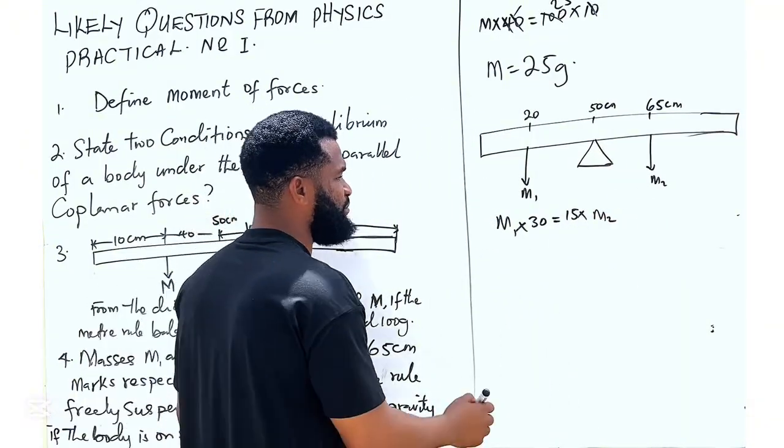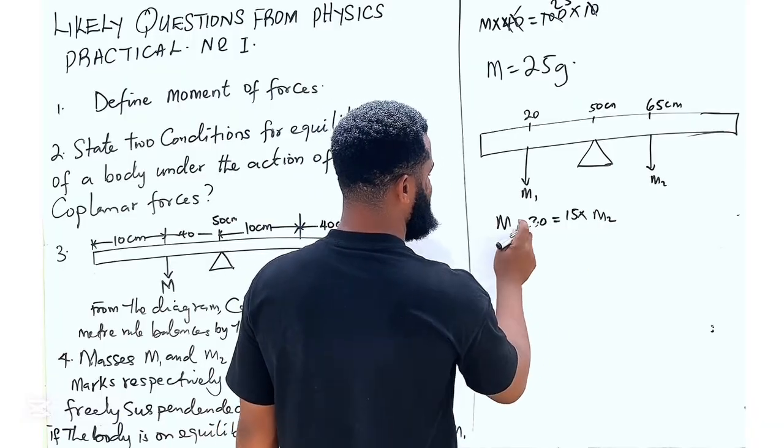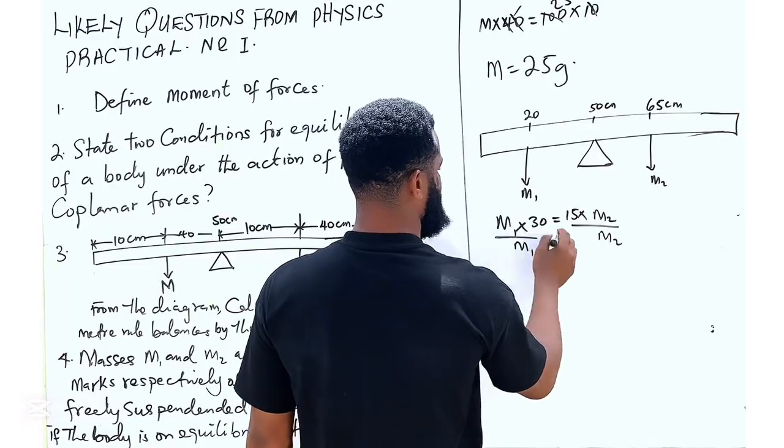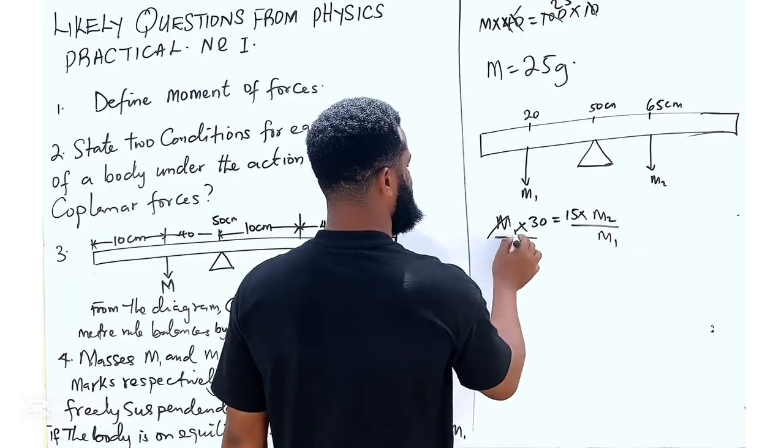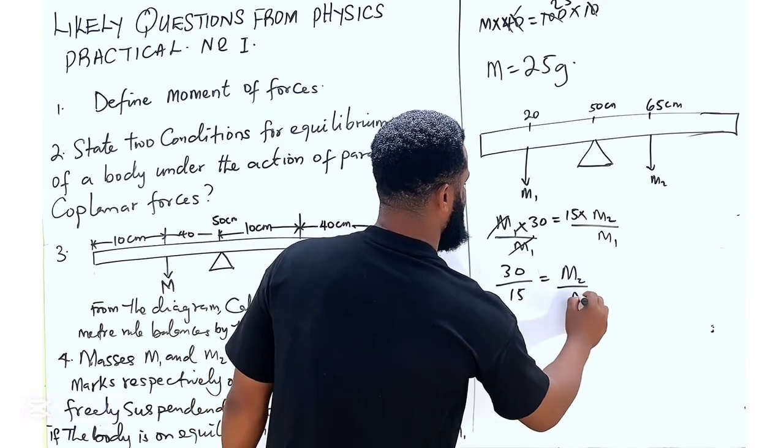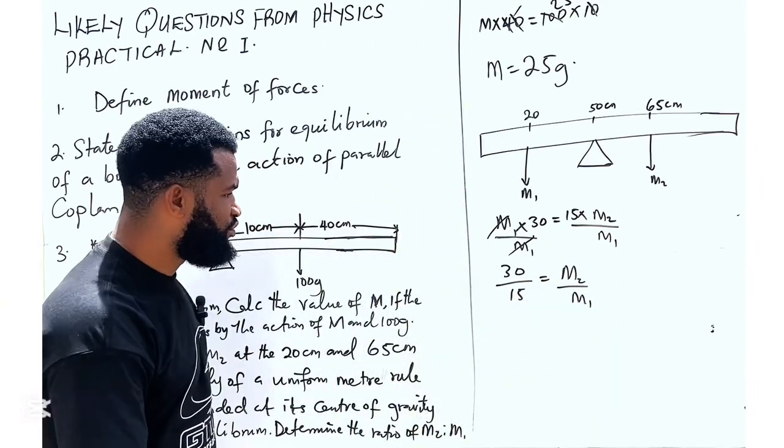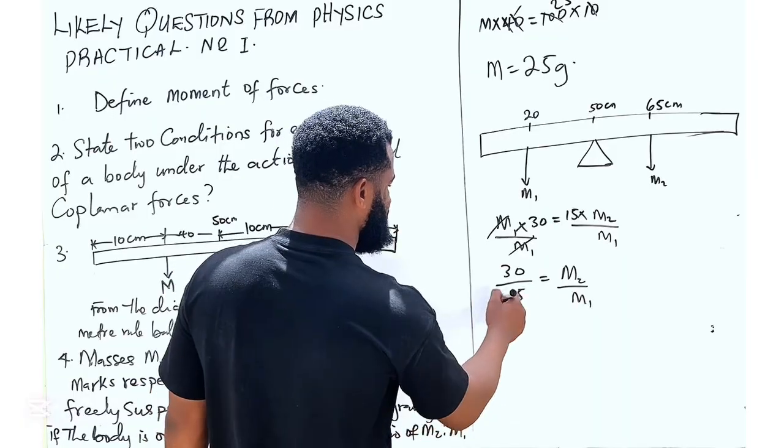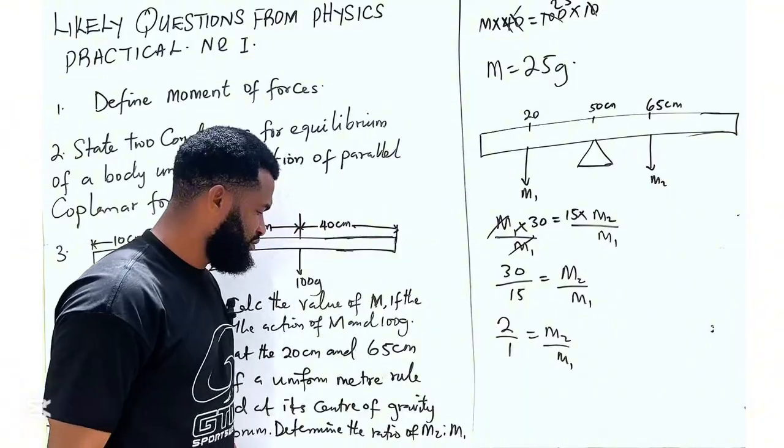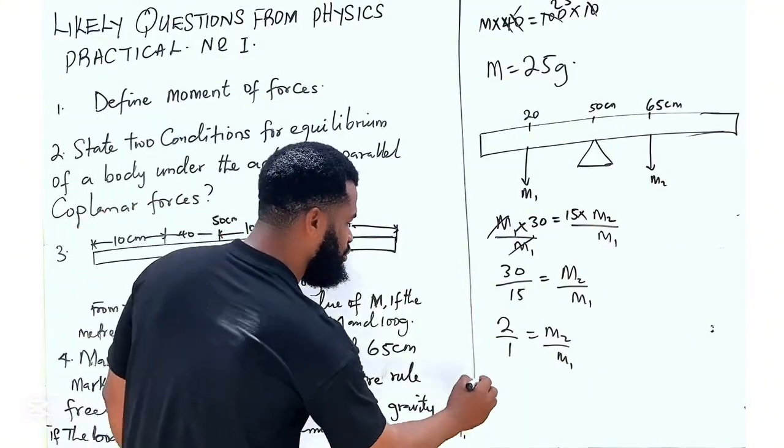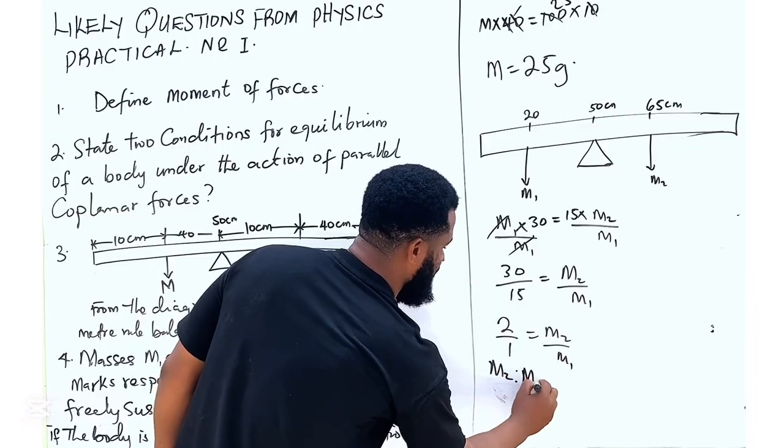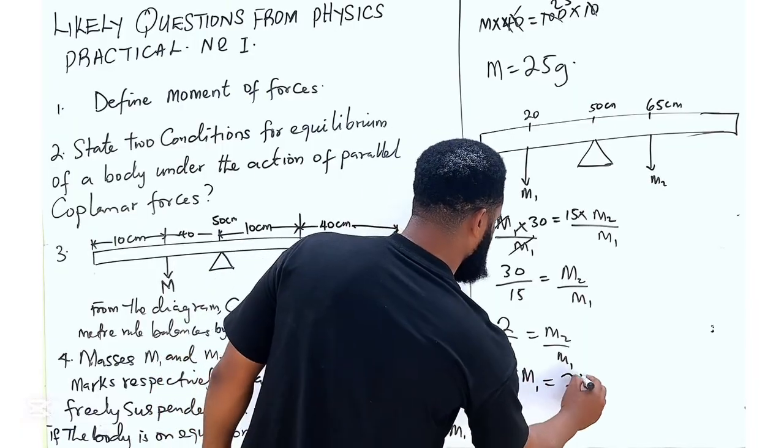So m2 divided by m1. I'm going to divide by m1 on both sides. So it's going to be 30 over 15 is equal to m2 over m1. So this is going to be 2 over 1, m2 over m1. That is m2 to m1 is equal to 2 to 1.